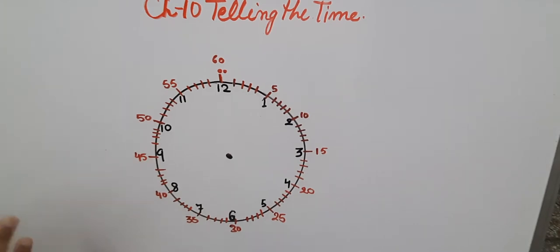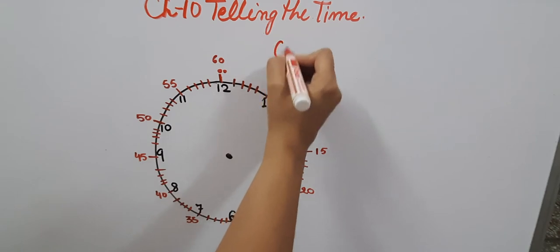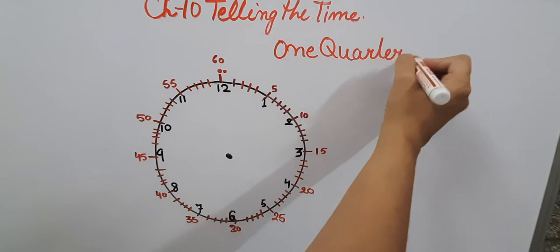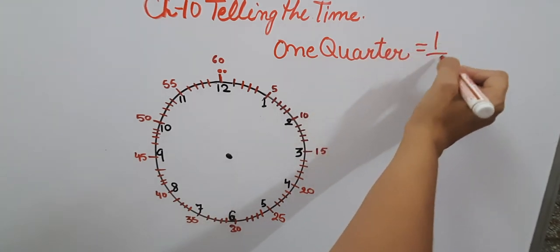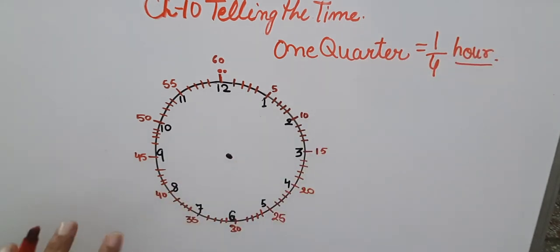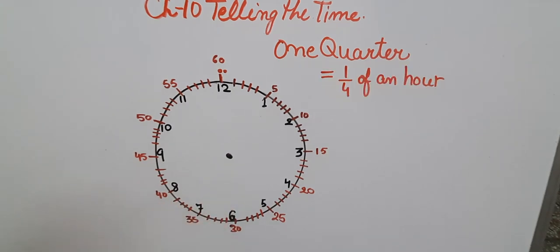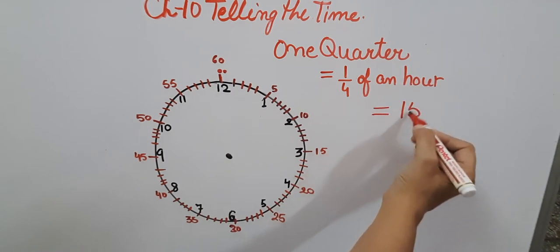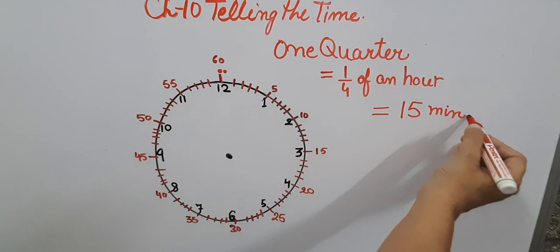Now if the question asks you how many minutes are present in 1 quarter or 2 quarters together, to understand this first we need to understand that 1 quarter means 1 fourth of an hour. And this 1 fourth of an hour equals 15 minutes.